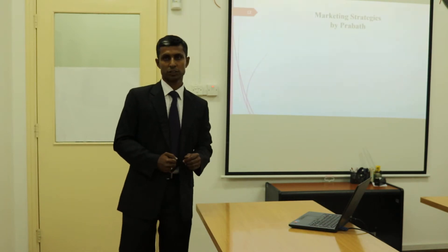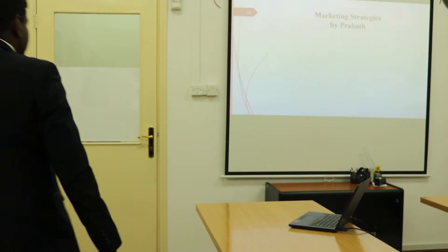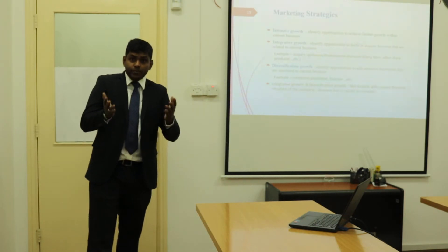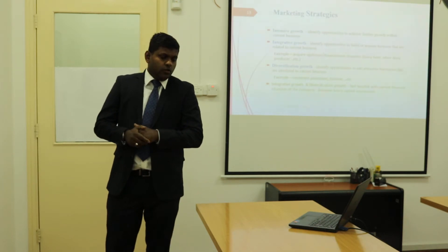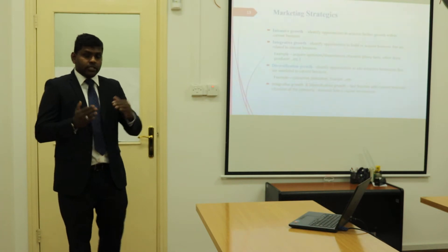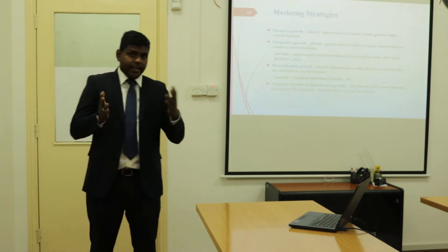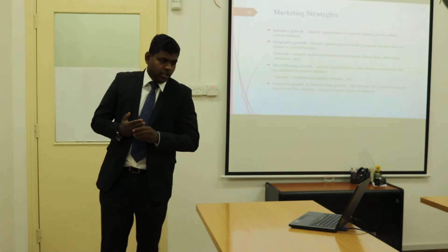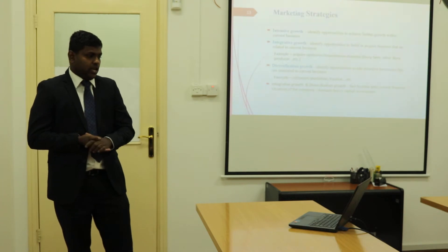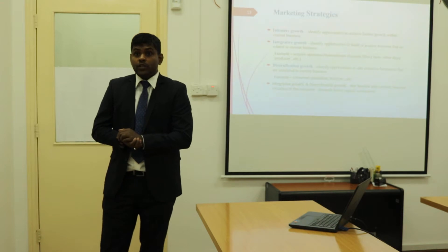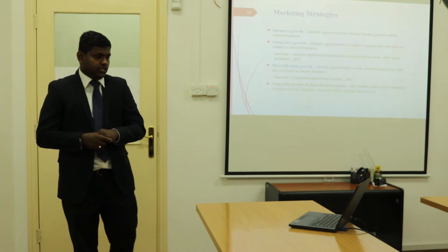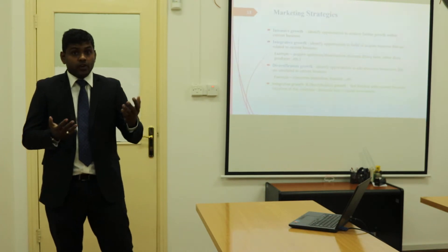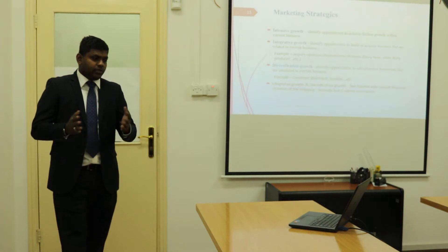Once you establish your marketing objectives, the next important step is to develop marketing strategy to achieve them. There are three main categories: intensive growth — identifying opportunities to achieve further growth within the current business; integrative growth — identifying opportunities to build or acquire businesses related to the current business, such as acquiring upstream or downstream channels like a dairy farm; and diversification growth — identifying opportunities to add attractive businesses unrelated to the current business.